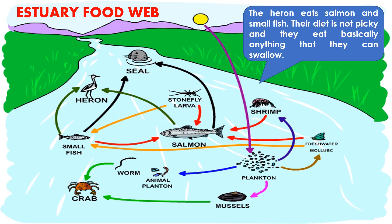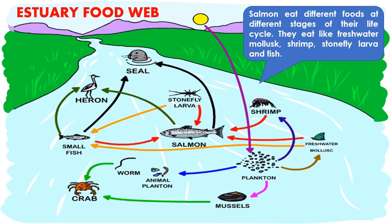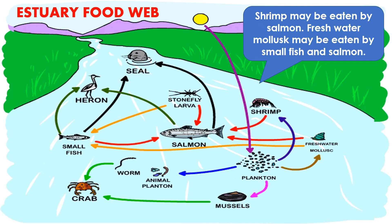The heron eats salmon and small fish. Their diet is not picky, and they eat basically anything that they can swallow. Salmon eat different foods at different stages of their life cycle — freshwater mollusk, shrimp, stonefly larva, and fish. Shrimp may be eaten by salmon. Freshwater mollusk may be eaten by small fish and salmon.